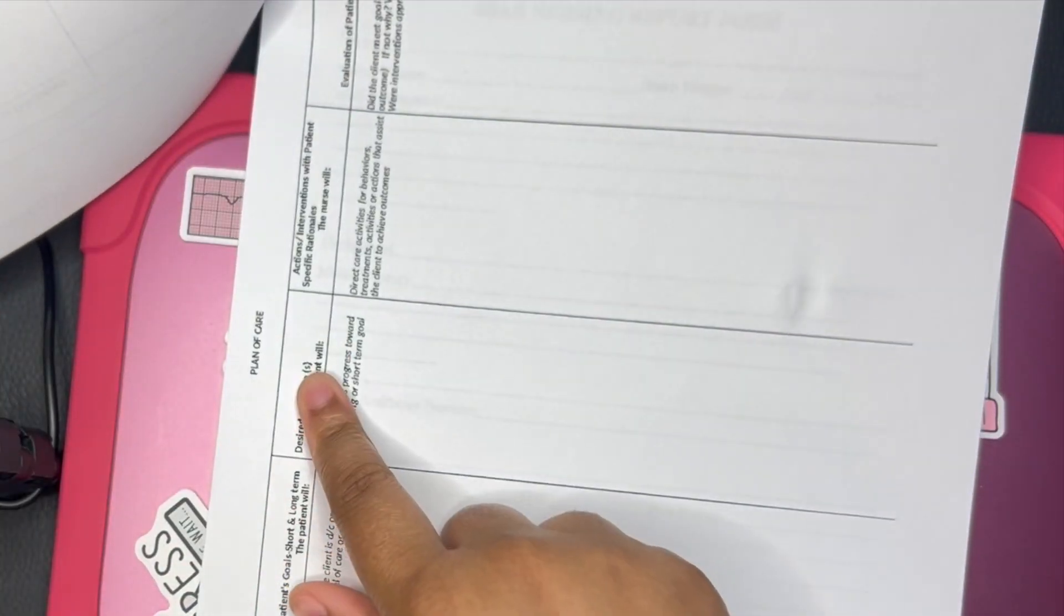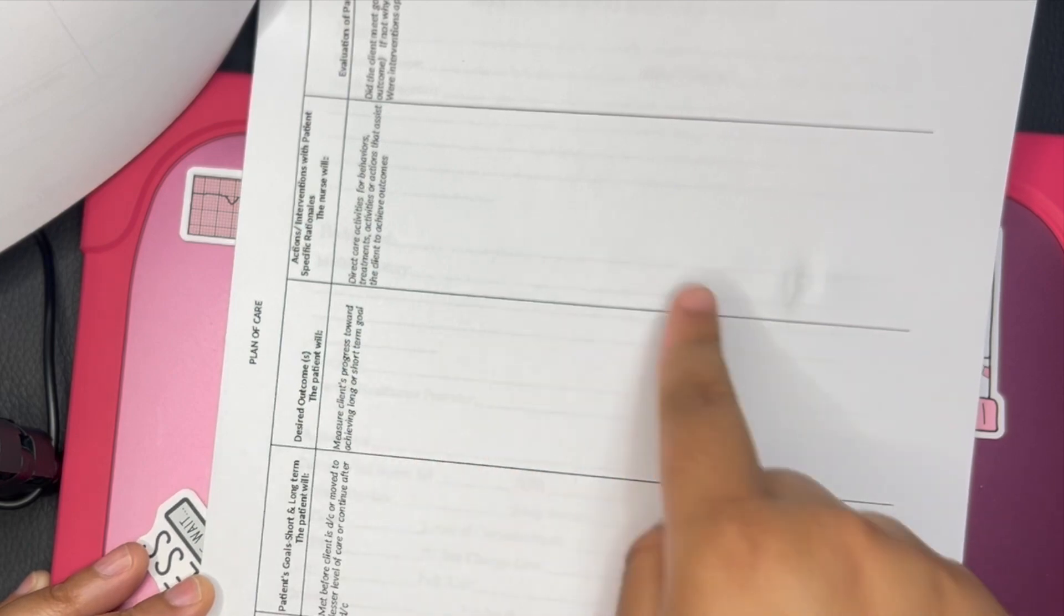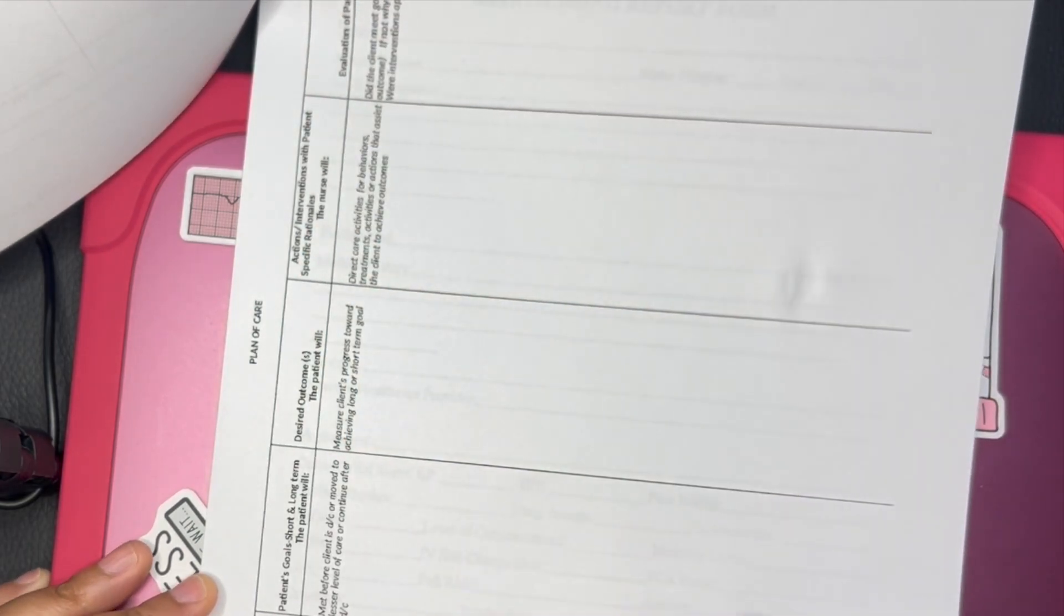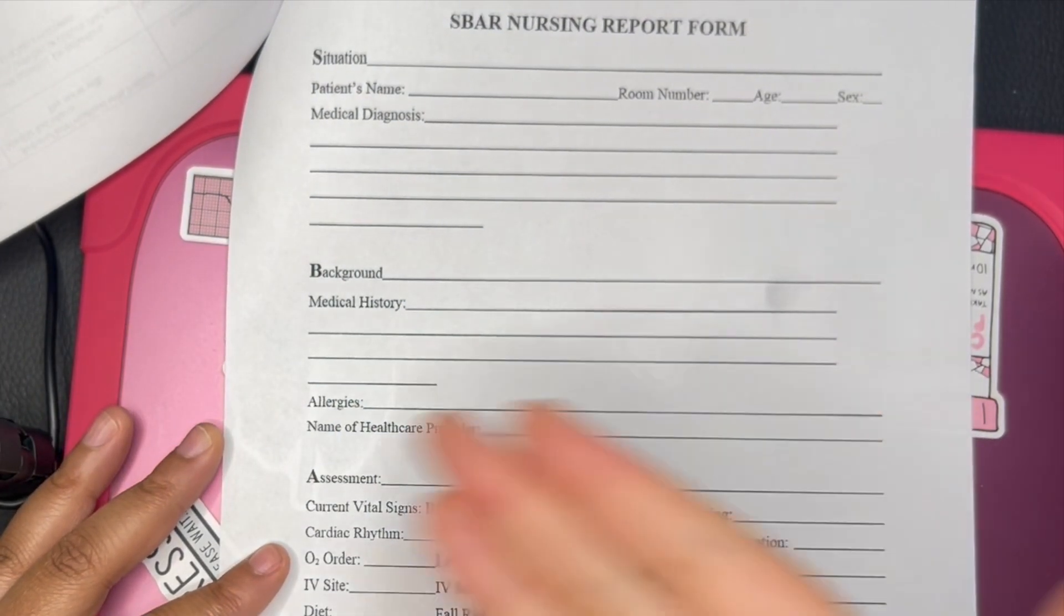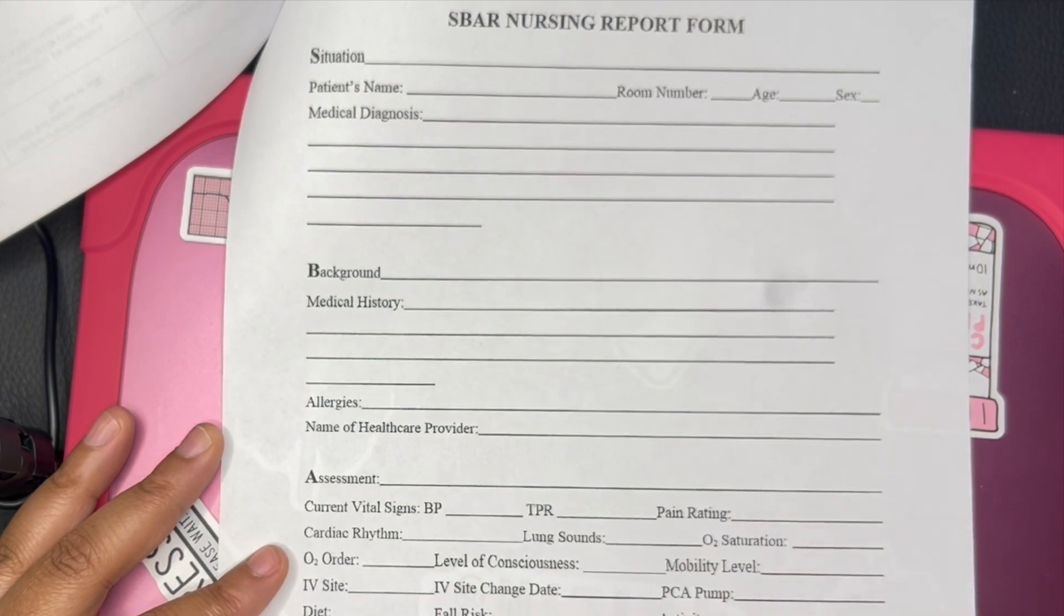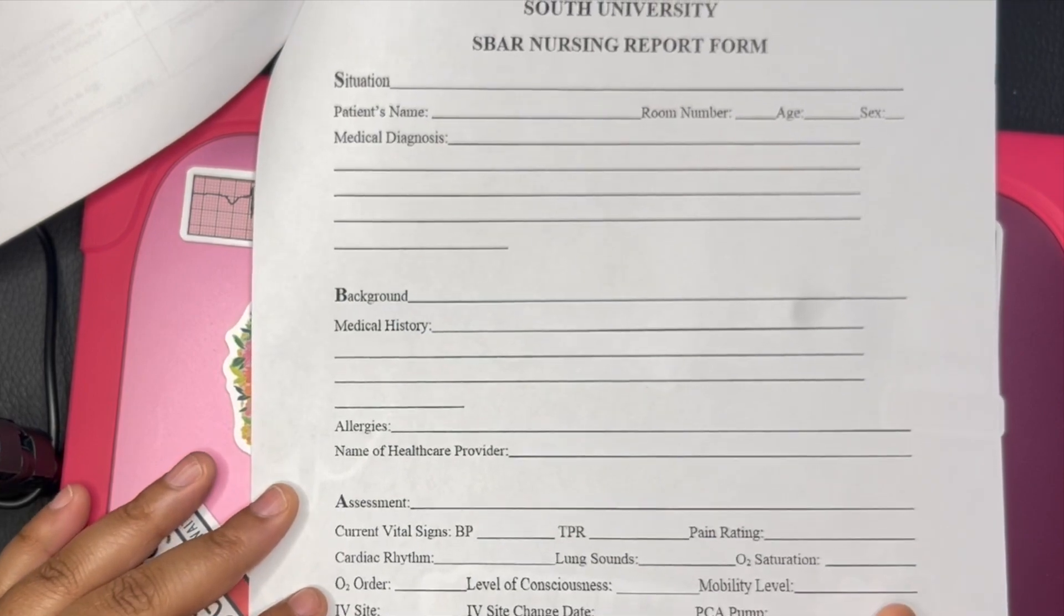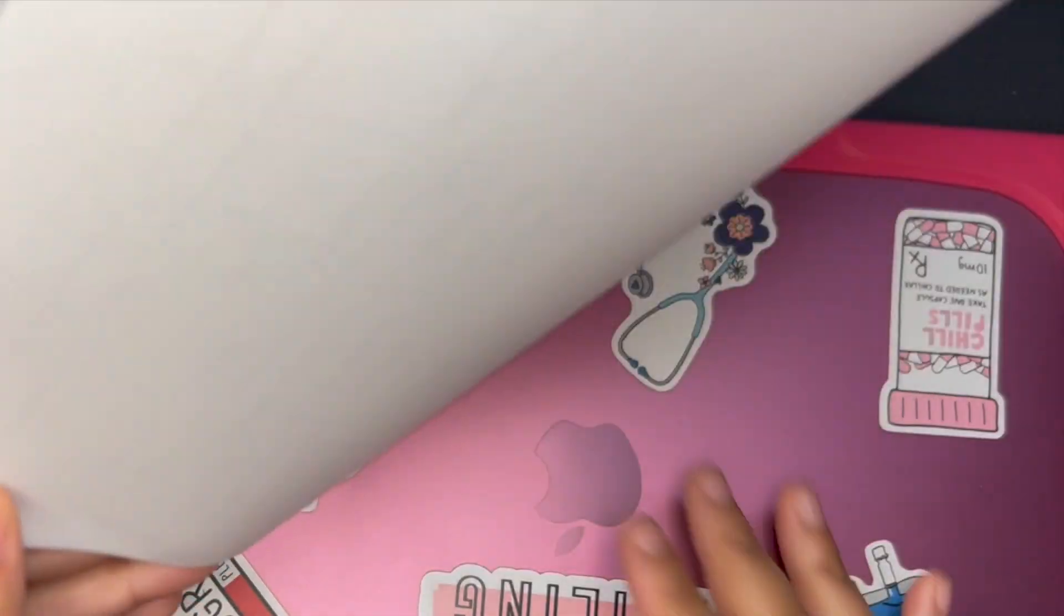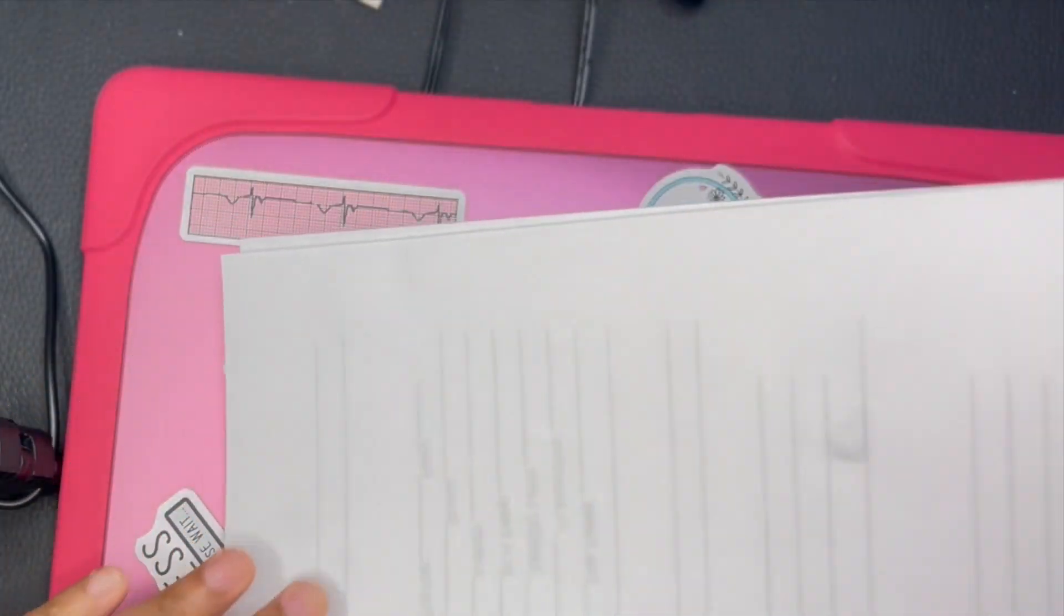Then you got your plan of care, basically your nursing diagnosis and short-term, long-term goals, outcomes, interventions, and evaluation of that. Then you have the lovely, lovely, lovely SBAR: situation, background, assessment, recommendations. I think concerns is like a last one. But yeah, and that is all a part of your clinical paperwork. It's not just oh, I'm going to clinicals and that's it.